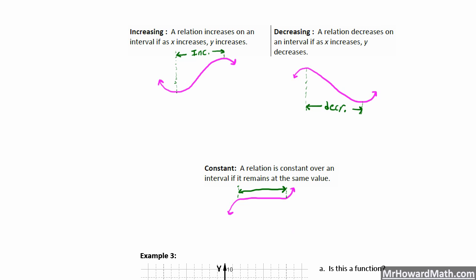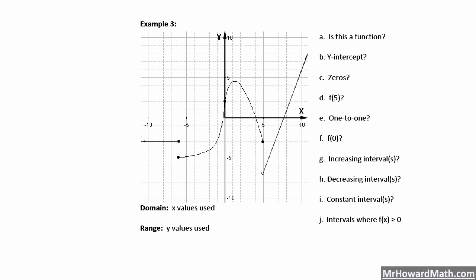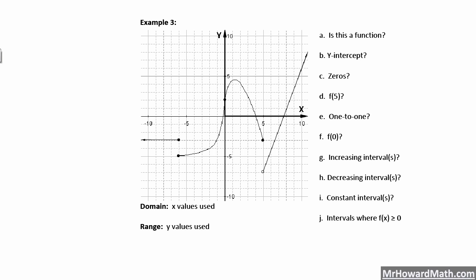That's all the definitions — now let's start applying them. Looking at this last example in your notes: first, is this a function? Does it pass the vertical line test everywhere? Notice you have a solid dot here — when your dot's filled in, that's included; when it's open, it's not included. We have a solid dot and a solid dot right here, so we fail the vertical line test there. That's enough to say this is not a function.